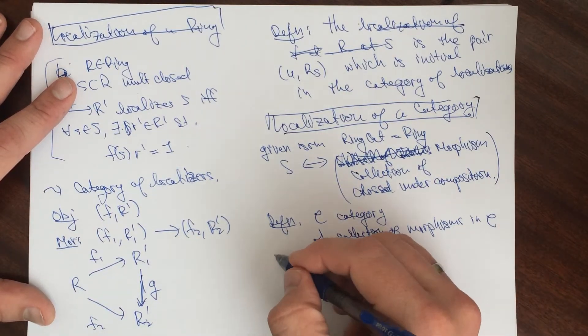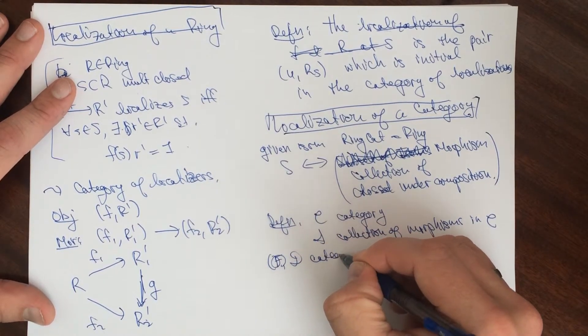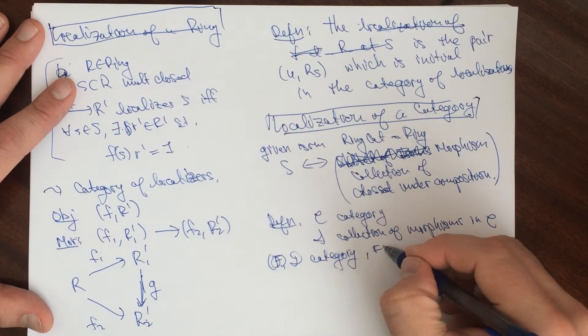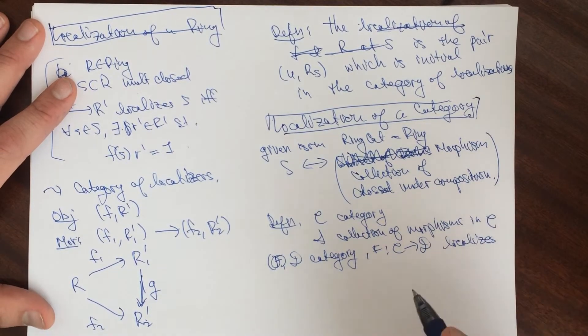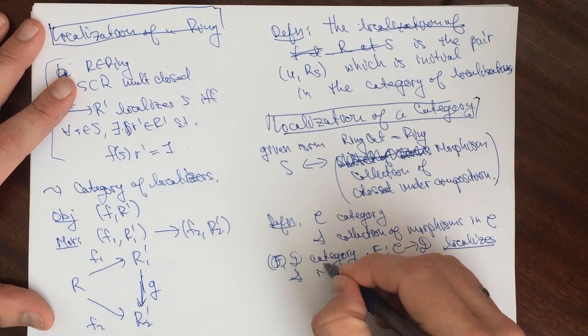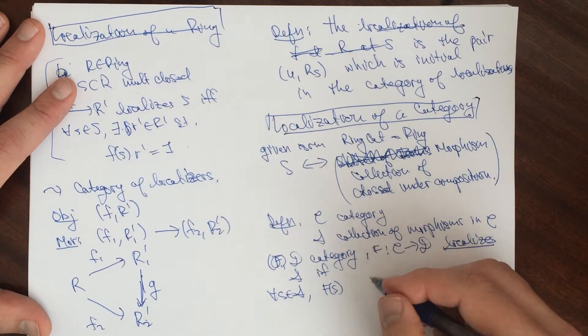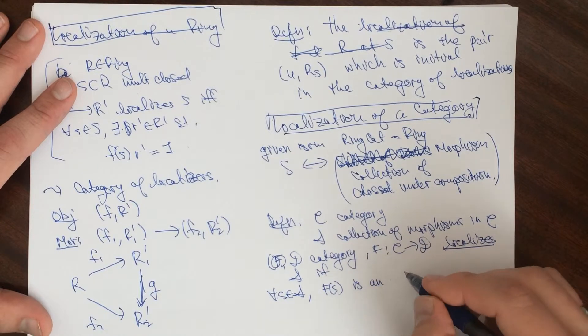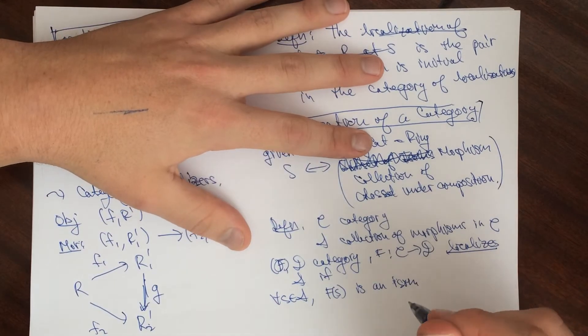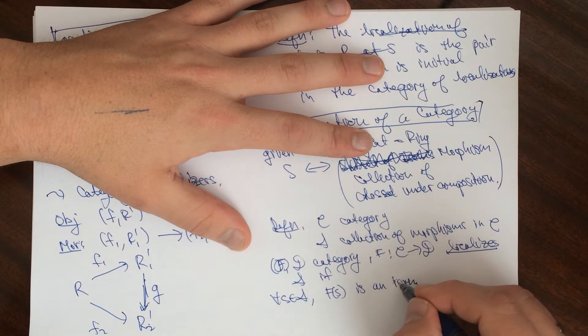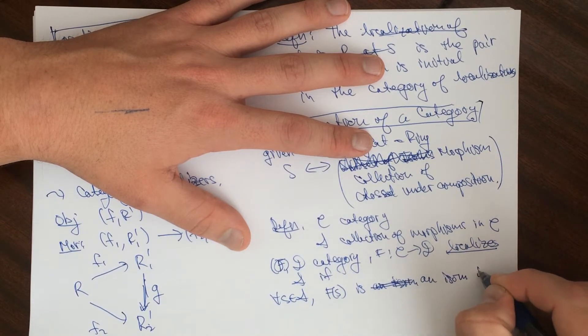We say that a functor, let's say D be a category and F be a functor from C to D, localizes S if for all S in S, F of S is an isomorphism.